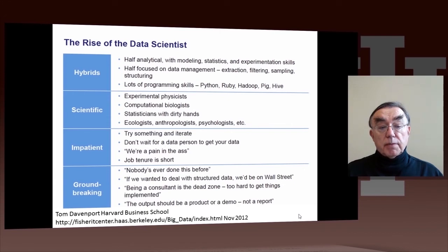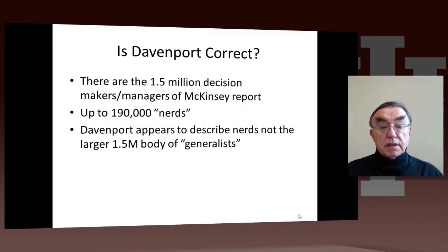There are two comments on that. The first comment is that if you remember the McKinsey report on data science, it said there were 1.5 million decision makers and managers and 190,000 nerds. So I would say Davenport's characterization is really for the nerds, not for the generalists, the larger 1.5 million. And the 1.5 million is roughly the target of this particular class.